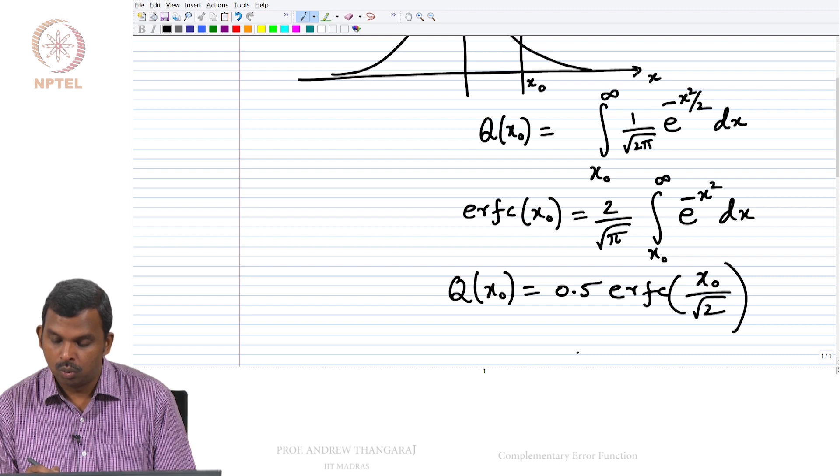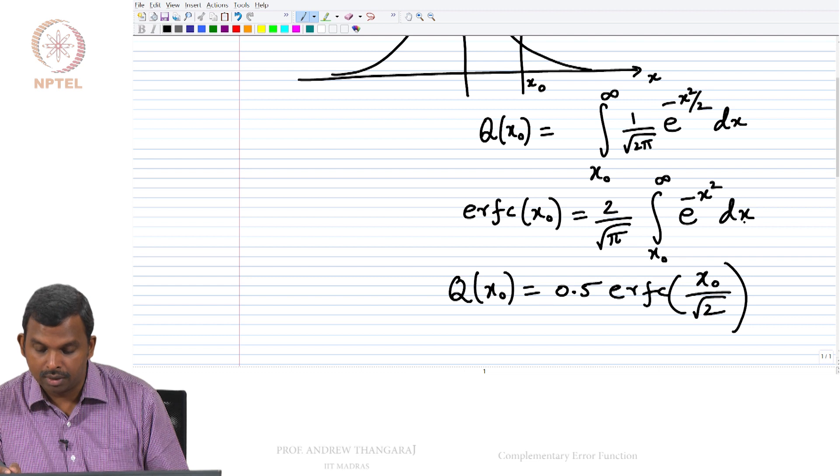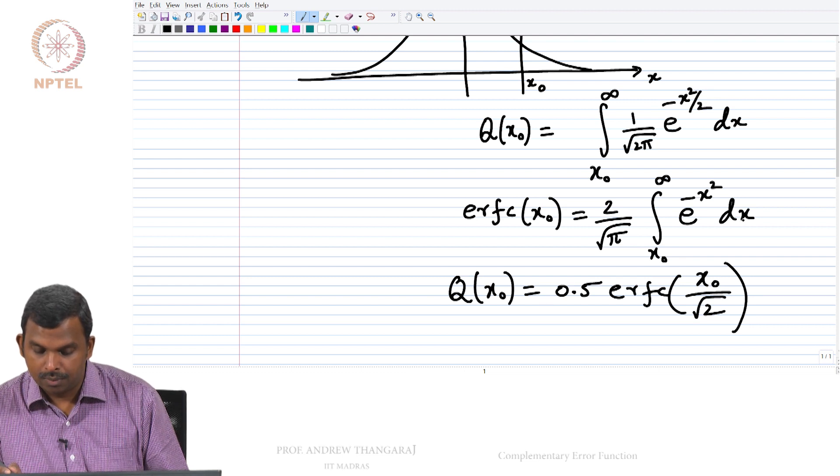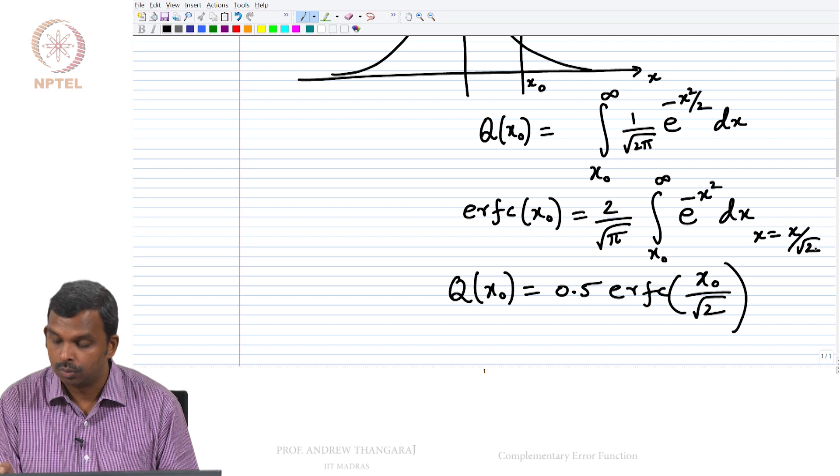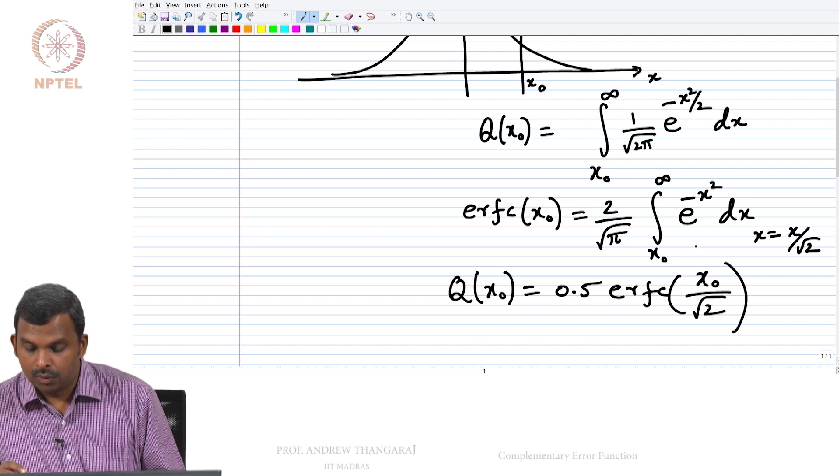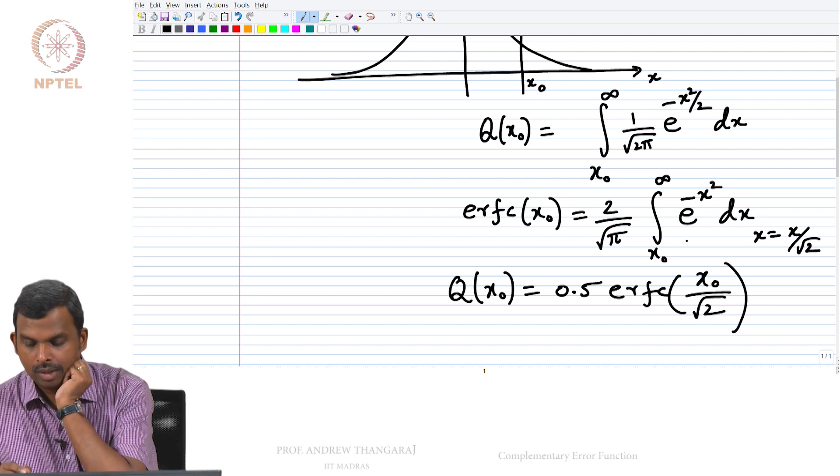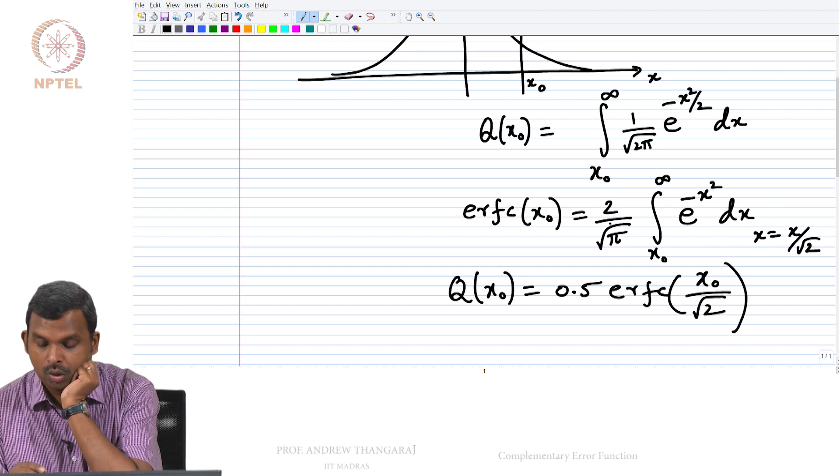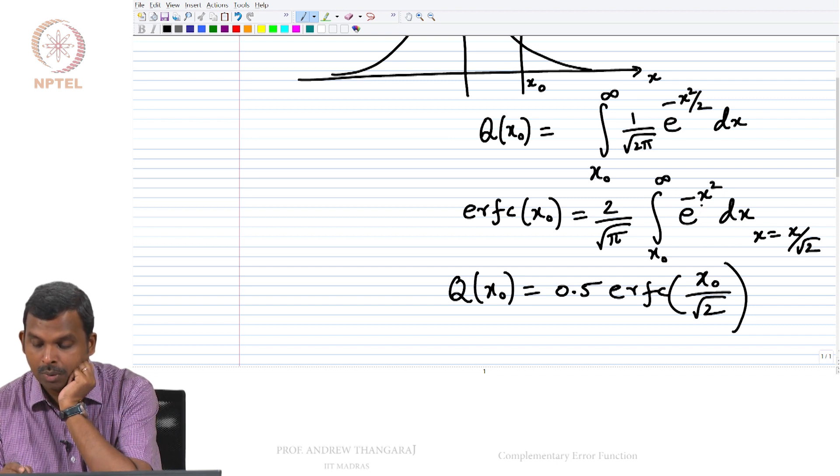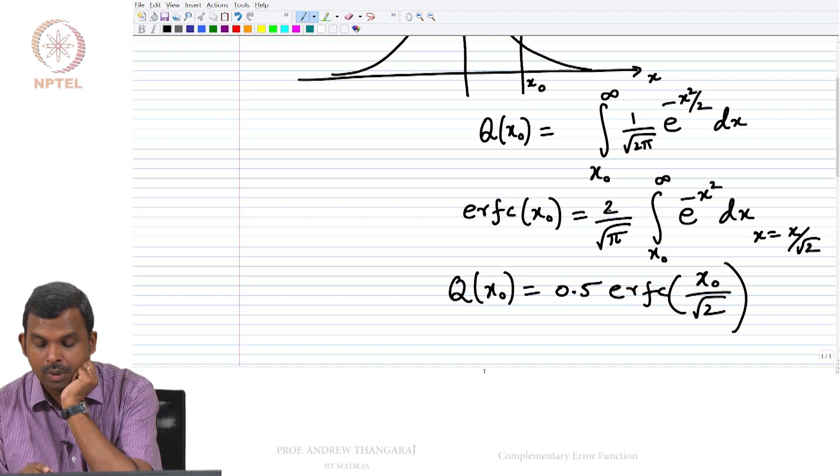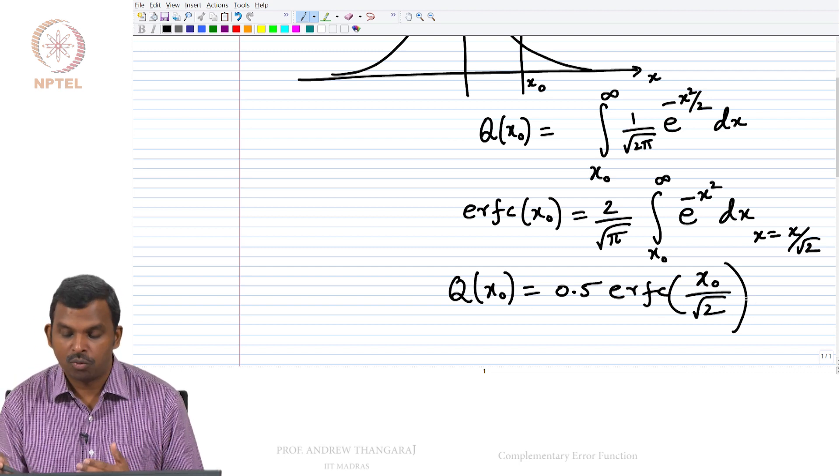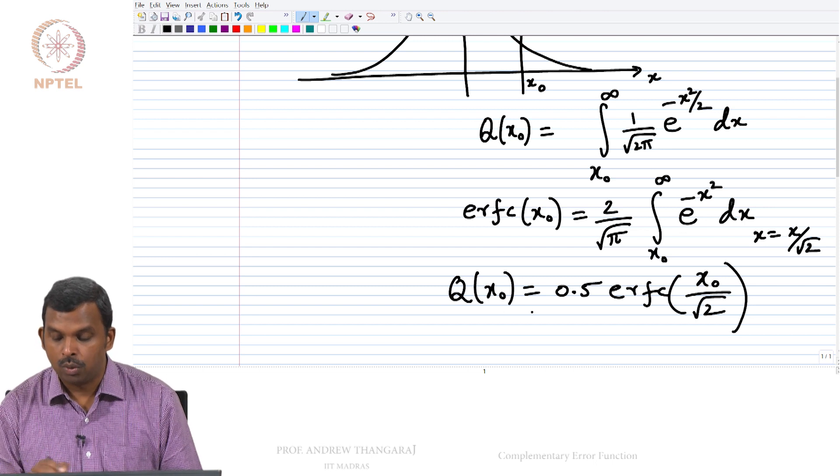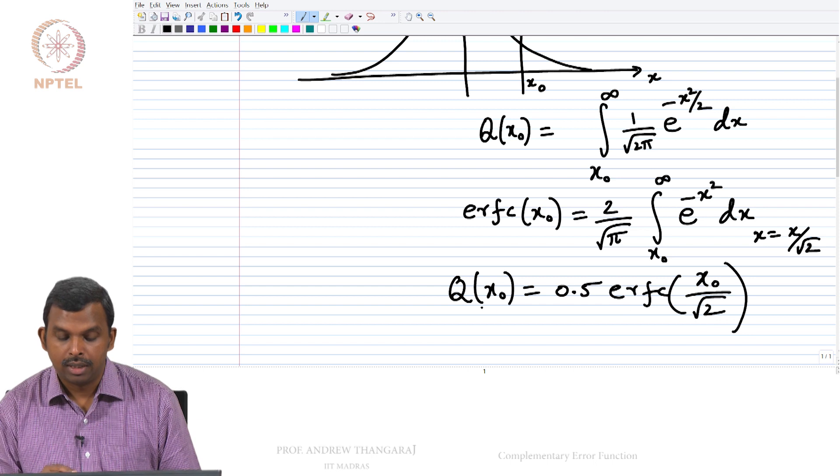So how to prove this? You will have to do a substitution here of x equals x by root 2. If you do that, this will become integral x0 by root 2 to infinity, 2 by root π e^(-x²/2). This will be 1 by root 2. So this 1 by root 2 will cancel here and you will get a root 2 but you need a 1 by 2 root 2, so you need a half. So this is a formula that I am not going to give you more details of. Please check this. If you do this substitution here, you will get this equality. So 0.5 ERFC x0 by root 2 is Q of x0.